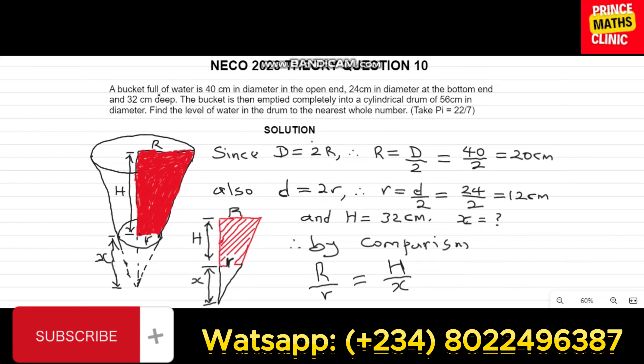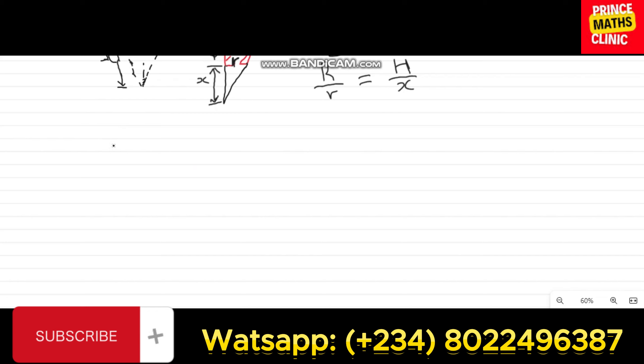So if you do that, this is what you are going to obtain. Our R is the big radius, which we have found to be 20. And our small r is 12. Equal to, what is our H? Our H is given to us as 32. But we are going to do this, because the H is the summation of this big H. The whole cone is H plus X. Let me write this over the small, which is X.